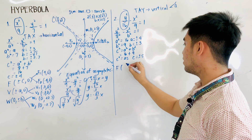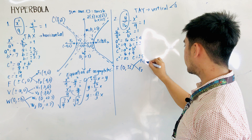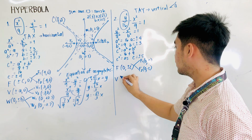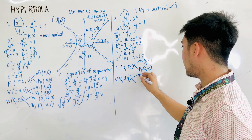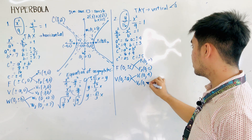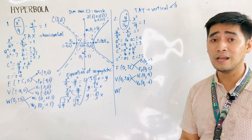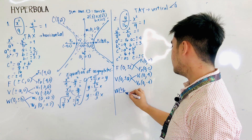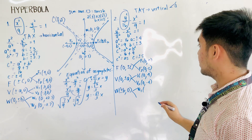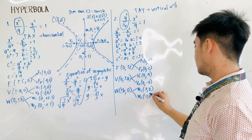For the foci, the formula is now 0, plus or minus c, giving F1 at (0, 5) and F2 at (0, -5). For the vertices, the formula is 0, plus or minus a, giving V1 at (0, 4) and V2 at (0, -4). For the co-vertices, the conjugate axis is the x-axis, so we use plus or minus b, 0, giving W1 at (3, 0) and W2 at (-3, 0).